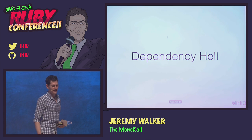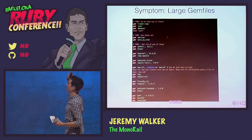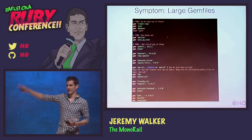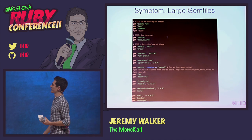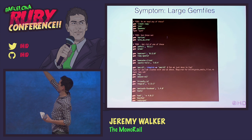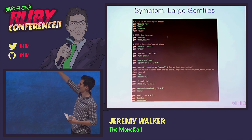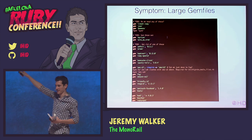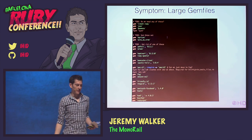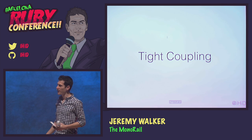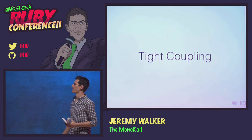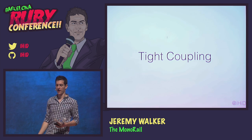You get to a situation of dependency hell. You have gem files that look something like this with 50, 100 different gems. This is literally real from projects. This gem is clashing with this gem. You get yourself into an absolutely horrible situation with massively tight coupling between all the different components.